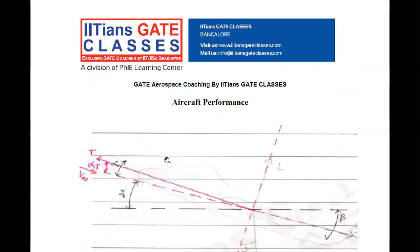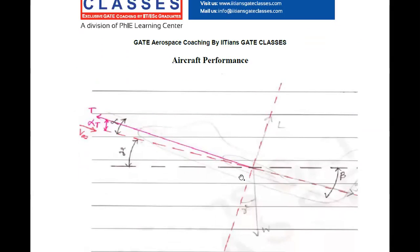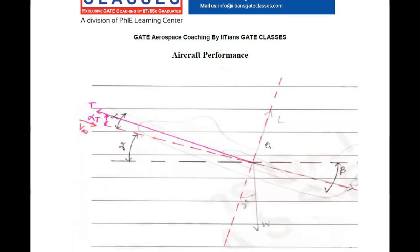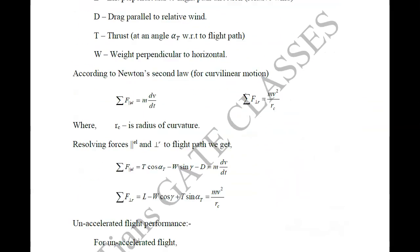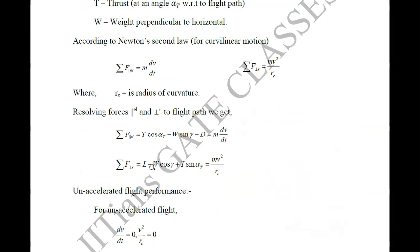When we resolve forces perpendicular to the free-stream velocity, we get: Lift minus W·cos(gamma) — since it acts opposite to lift — plus T·sin(alpha_t) — since when resolved it acts in the same direction as lift. So the equation is: Lift − W·cos(gamma) + T·sin(alpha_t) = mass × centripetal acceleration.